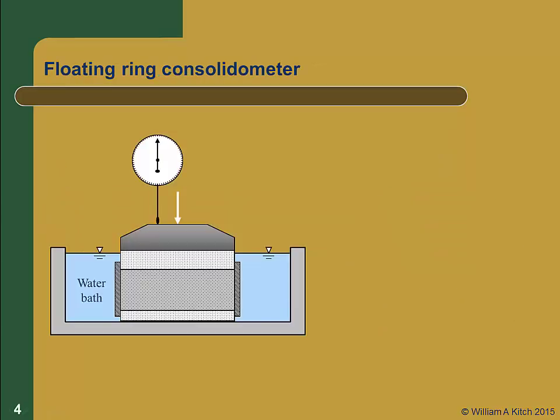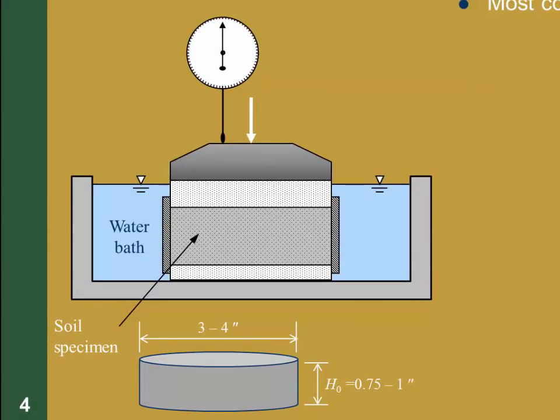There are two main types of consolidometers, the floating ring and the fixed ring. The only one we'll discuss here is the floating ring consolidometer, which is the most common type. In the center is a short cylindrical soil specimen about the size and shape of a hockey puck. It's usually about three-quarters to one inch thick and three to four inches in diameter. The specimen is contained in a confining ring, which is made of metal, is very stiff compared to the specimen, and therefore prevents any lateral strain, thereby ensuring that we have a one-dimensional consolidation test.